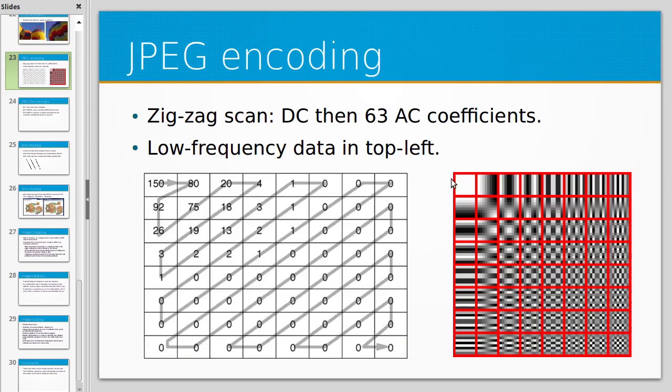To actually encode an 8 by 8 block, what's happening is that these coefficients are used to represent how to combine these different patterns that you can have. There's the low frequency patterns to high frequency patterns.